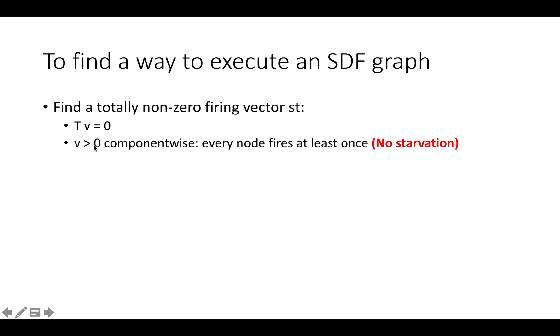And if v is greater than 0 component-wise, that means in this firing sequence, every single node is going to fire at least once, which means this schedule is not going to starve any of the nodes. If you're familiar with distributed systems terminology, starvation just means one process never firing or never getting access to the resources that it's going to need.